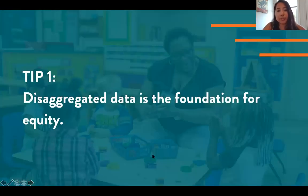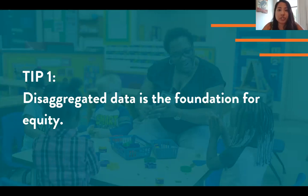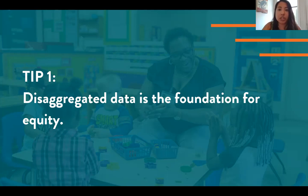Let's jump into the different best practices for data analysis and visualization. Tip number one: disaggregated data is the foundation for equity. Professor Krakow of Stanford puts it like this: raw data is like iron ore — it needs to be formed in ways that can make it clear to people what's wrong and what they can do about it, in order for it to become action rather than just information. So when it comes to advocacy, our job is to turn data from just a raw statistic to something that can activate someone to take action. The first step in doing that is to present an accurate picture of what's happening.